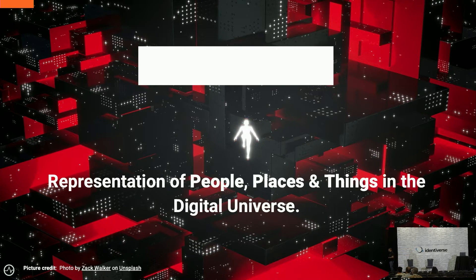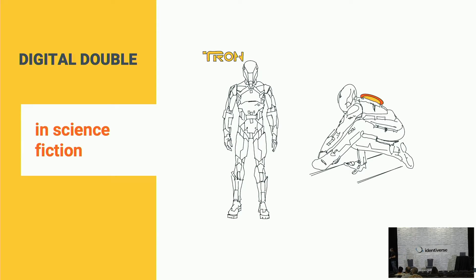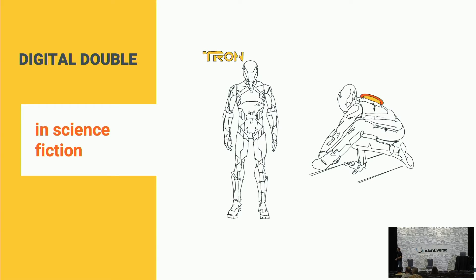The digital double is basically a representation of people, places, and things in the digital universe. The best way to understand it is the movie Tron Legacy, released around 2011-2012. There are two characters, Sam Flynn and Kevin Flynn. Kevin loses his identity inside the digital world and his son Sam tries to rescue him. It's a nice movie that really explains the concept of the digital double — if you haven't watched it, go watch it.